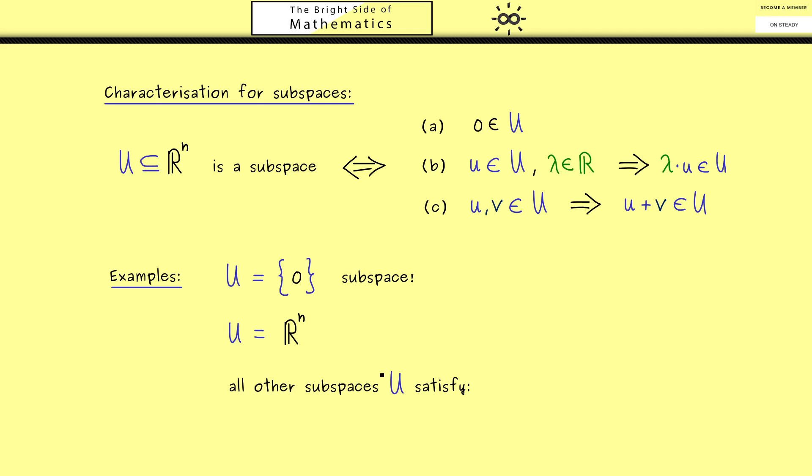This means that all other subspaces U have to lie in between. Hence there we would have lines and planes as we have discussed it at the beginning. However, for a non-trivial example in general you have to check all the three properties here, and this is something I will show you in the next video.